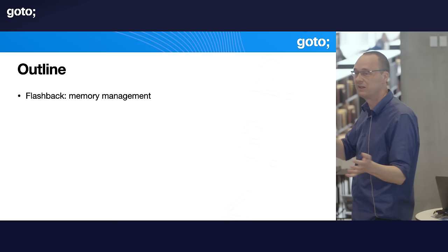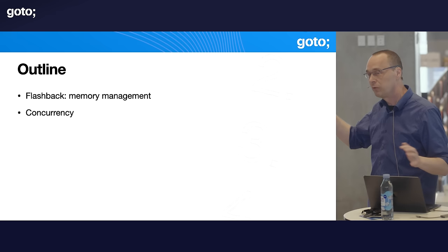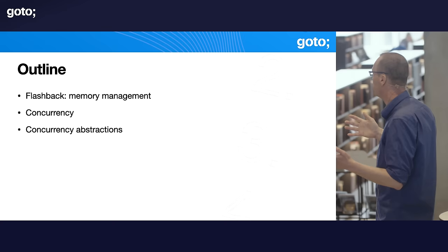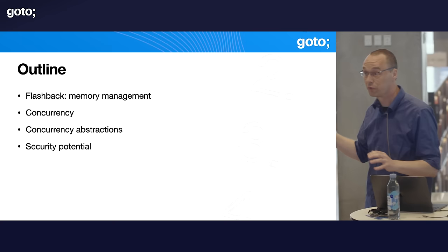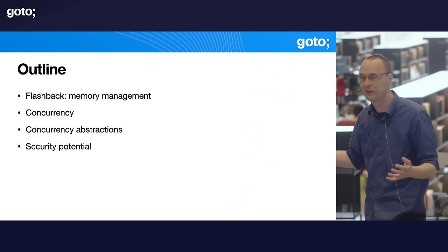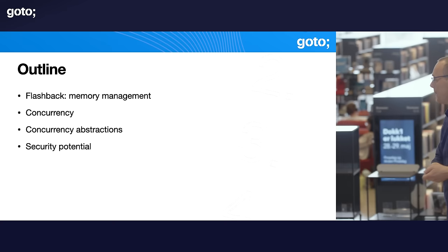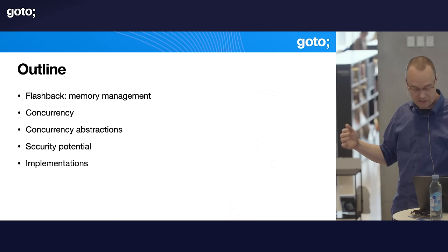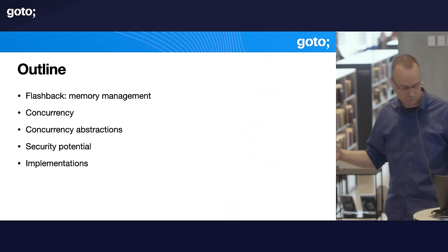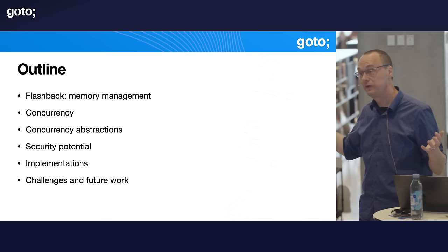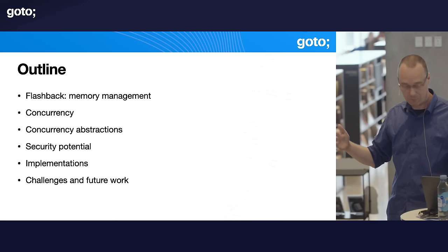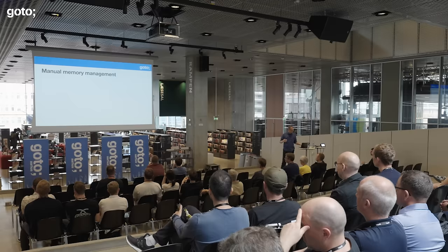As an outline for this talk, I want to talk a little bit about how we used to do memory management and what has changed since those early days. Then I want to introduce some basic concurrency concepts and describe what I mean when I talk about concurrency abstractions. Then I want to talk about the security potential — and I'm carefully using the word 'potential' here because not all of this has been fully realized. These are ideas. And I'll finish up with some challenges and future work: what needs to be done to maybe realize some of these potential benefits?